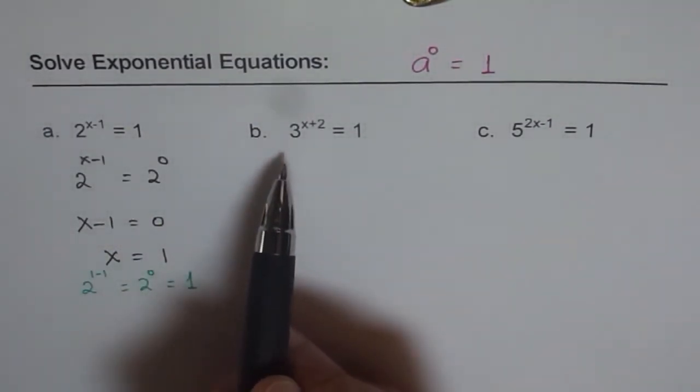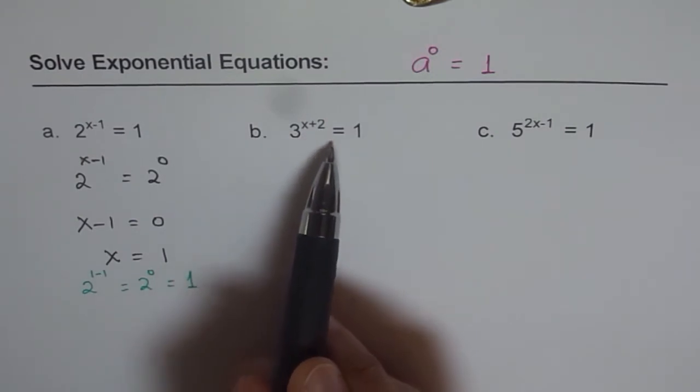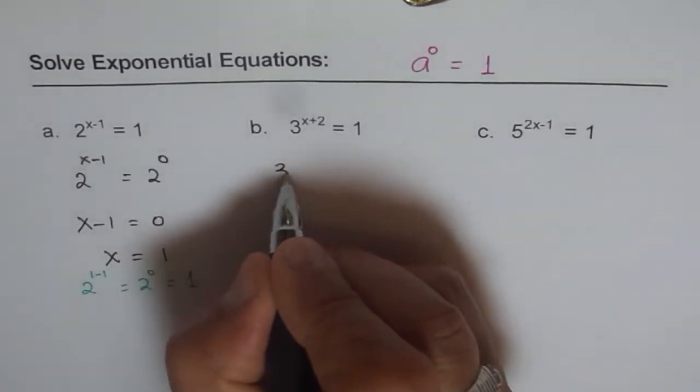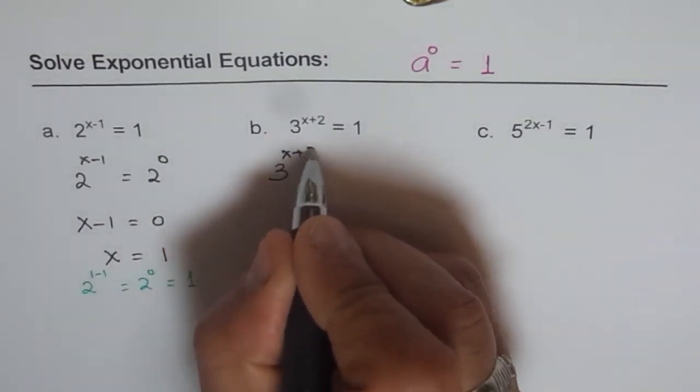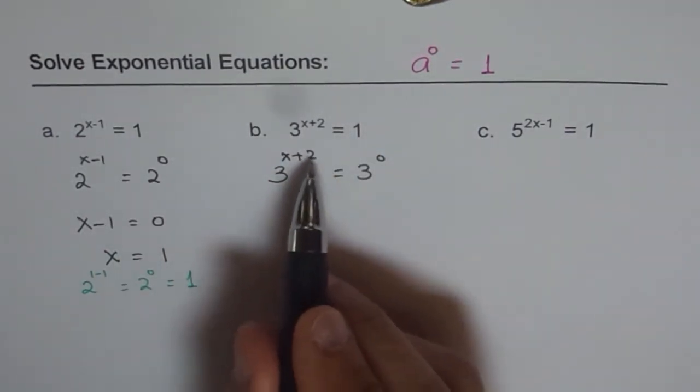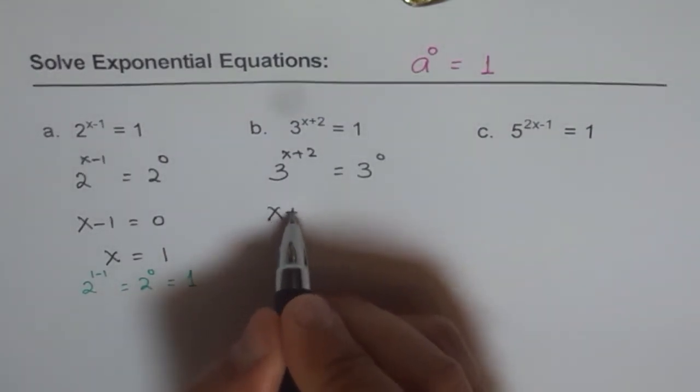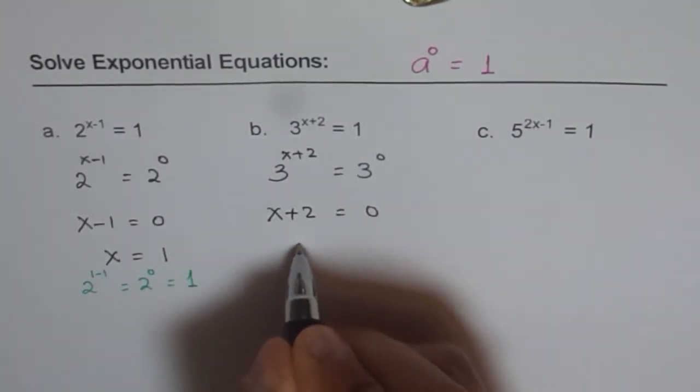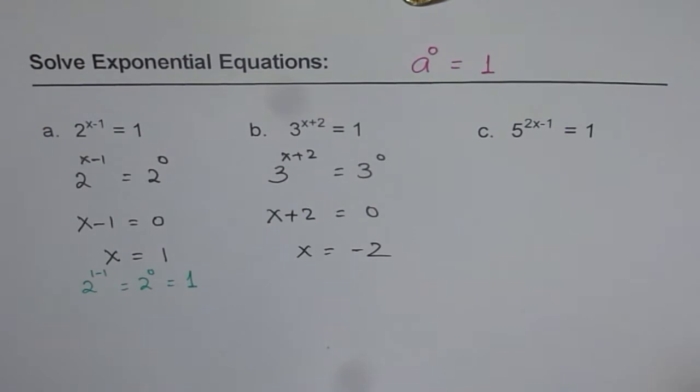Part B is 3 to the power of x plus 2 equals to 1. So I can write this as 3 to the power of x plus 2 equals to 3 to the power of 0. Same base, exponents should be same. We get x plus 2 equals to 0. x equals to minus 2. That's my solution.